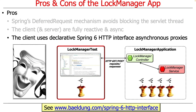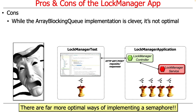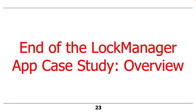Another benefit is that the client uses declarative Spring 6 HTTP interface asynchronous proxies, which isn't possible with the Retrofit approach used in previous programming assignments. The next version of the programming assignment will switch some things over to use HTTP interface. There are still downsides — the ArrayBlockingQueue implementation of a semaphore is clever but not the most efficient approach. A future class on synchronization will cover more efficient semaphore implementations.